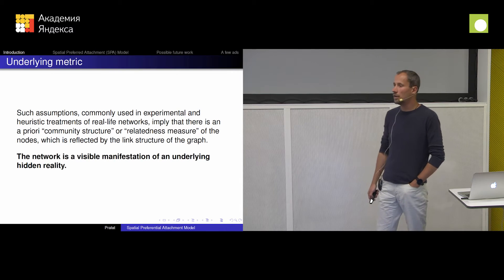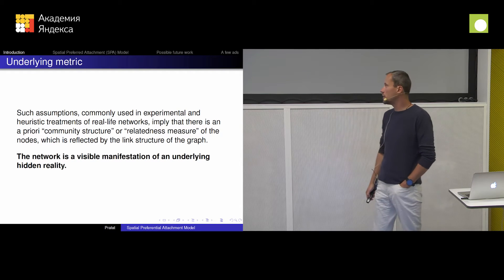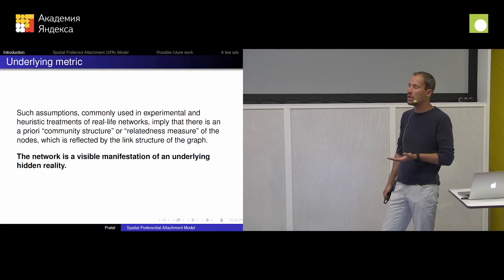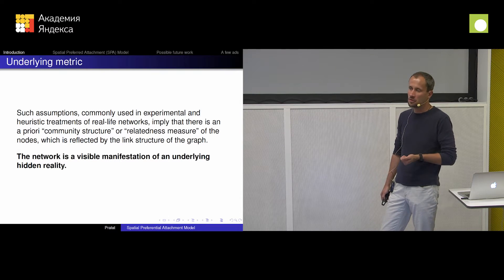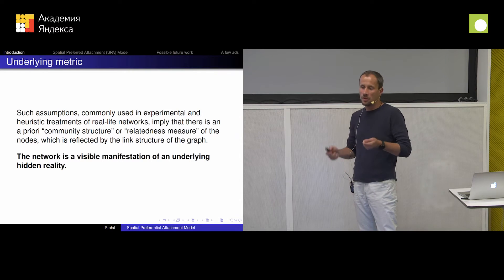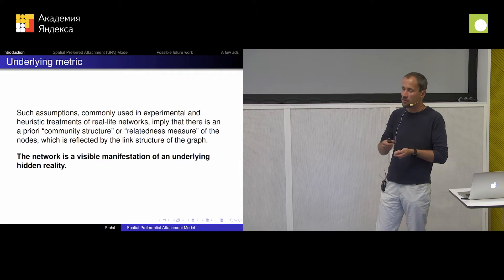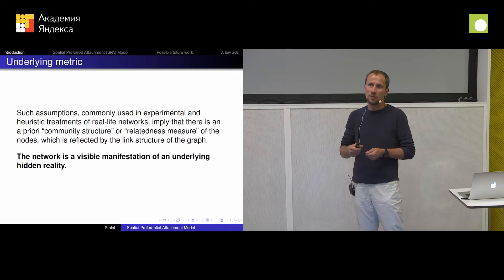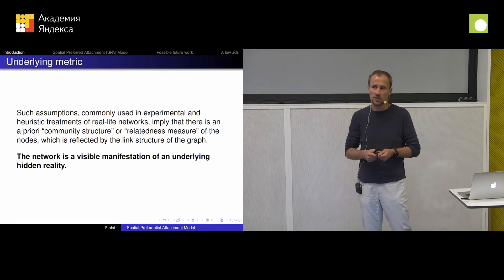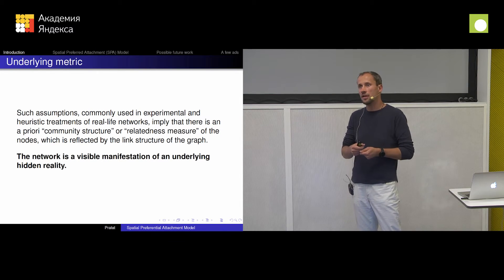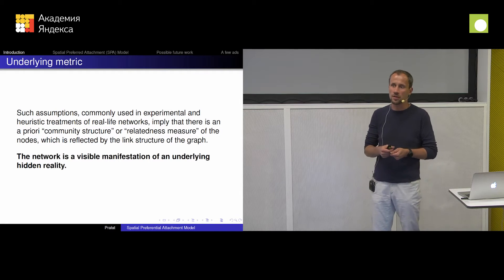So what would be a good idea for our models? I guess it would be nice to assume that there's some kind of underlying metric happening. Let me put it this way: for example, let's think that I'm joining Facebook today. How do I connect to the existing people there? I guess it's not just by pure randomness — it's more like I'm connecting to them because they are similar to me.